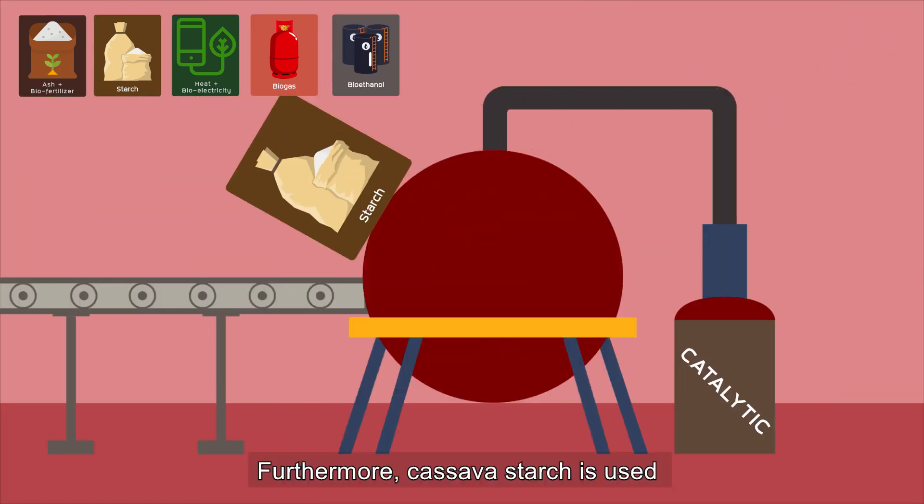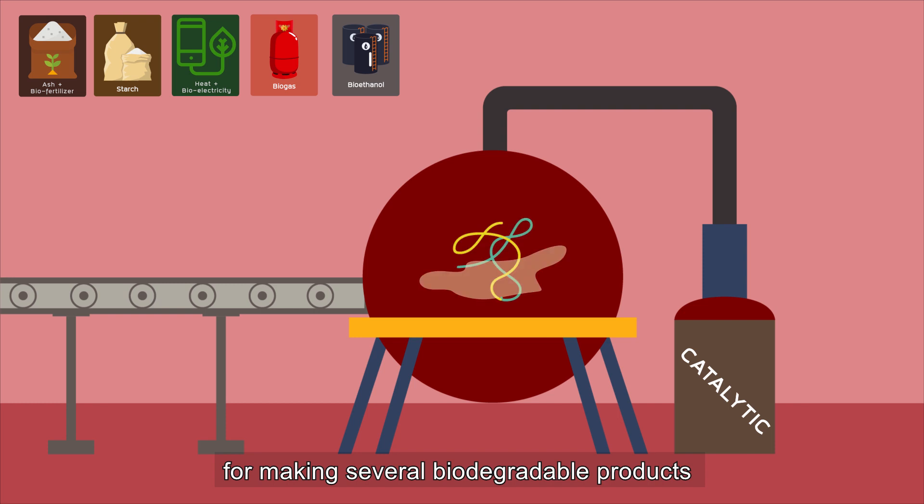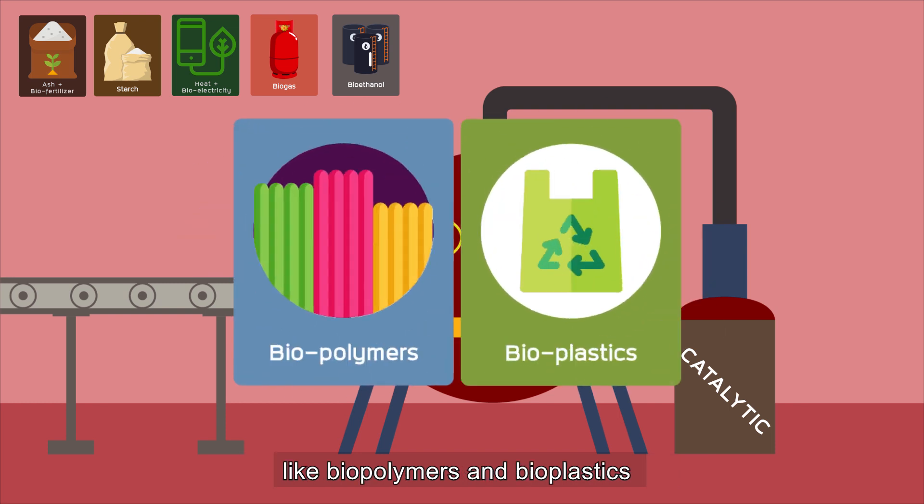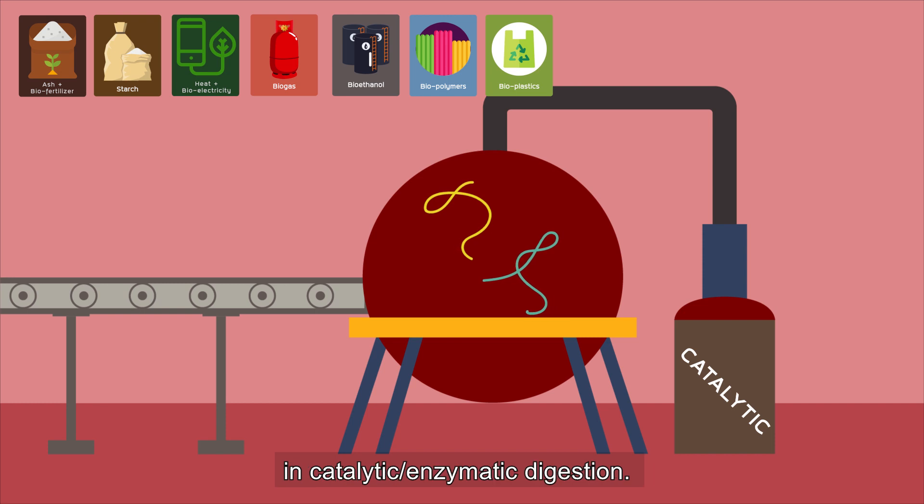Furthermore, cassava starch is used for making several biodegradable products like biopolymers and bioplastics through catalytic enzymatic digestion.